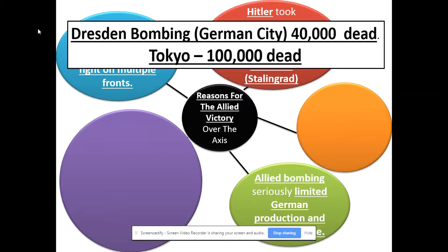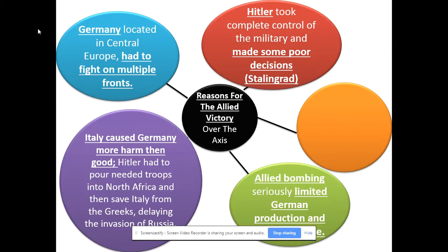The last reason: Italy causes Germany more harm than help. Even though Italy is an ally, Hitler is constantly having to redirect his troops down to North Africa to help out Mussolini and then to Greece to help Mussolini out. This is going to delay the invasion of the Soviet Union by a month. Originally he wanted to go in May and then he had to go in mid-June. Think about it — if he goes in May, he captures Moscow before the winter sets in; the war is over. So this potentially cost Hitler the entire war, having to help out Mussolini again and again.